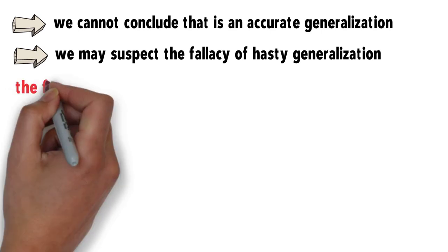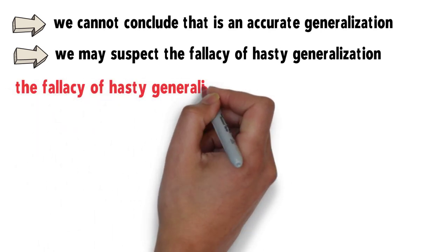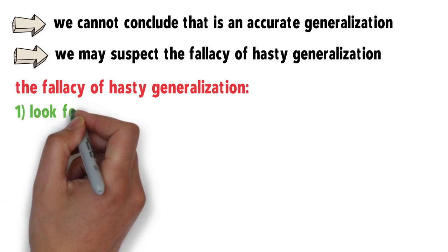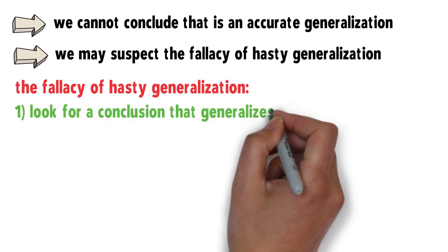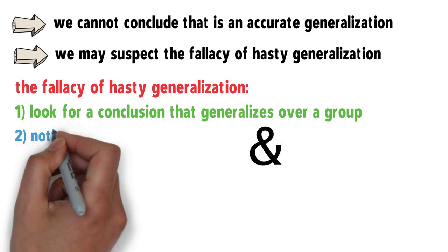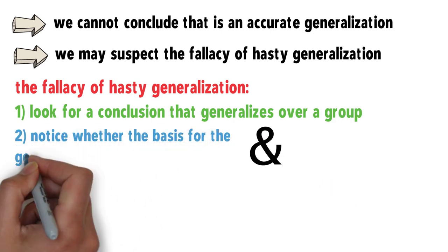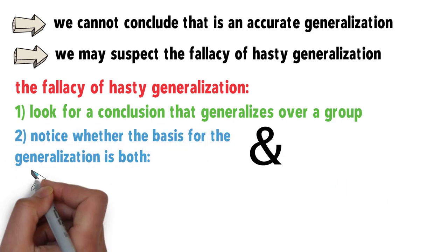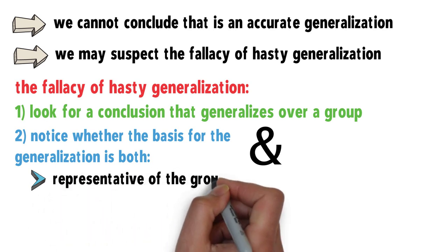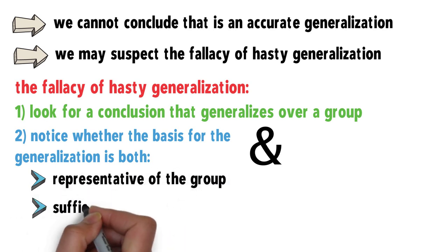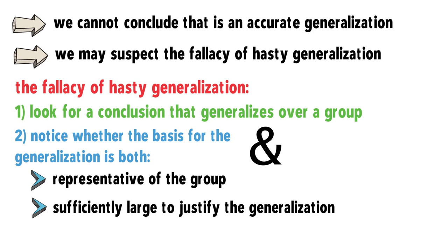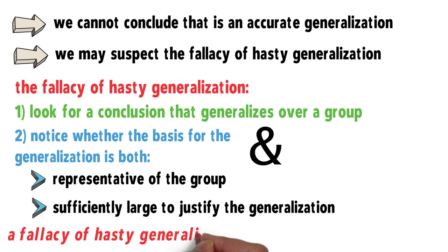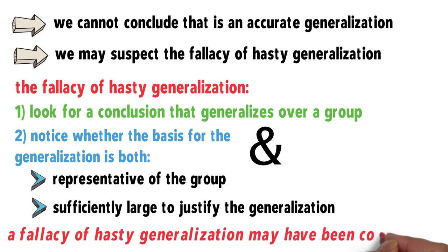To identify the fallacy of hasty generalization, we need to look for a conclusion that generalizes over a group and notice whether the basis for the generalization is both representative of the group and sufficiently large to justify the generalization. Otherwise, a fallacy of hasty generalization may have been committed.